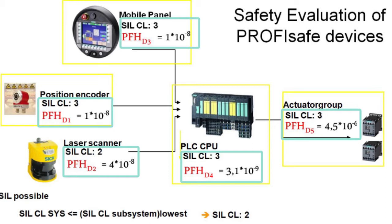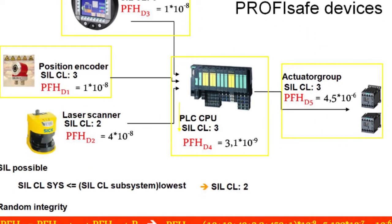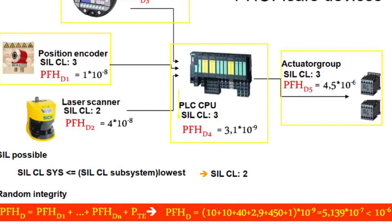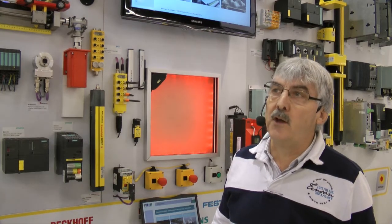The user simply has to make sure that the SIL and PL of the device are at least equal to the required SIL and PL, and then verify that the addition of the PFH values of all devices in the safety-related functions remain compatible with the required SIL and PL. This can be done and documented using tools such as the Safety Evaluation Tool or SISTEMA, for example.